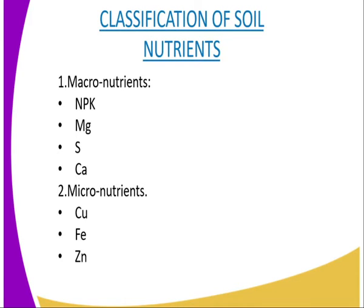We can classify soil nutrients into two categories. We have the macronutrients, that is NPK: N stands for nitrogen, P for phosphorus, and K stands for potassium. Then we have magnesium, still in macro, then sulfur, and finally we have calcium.